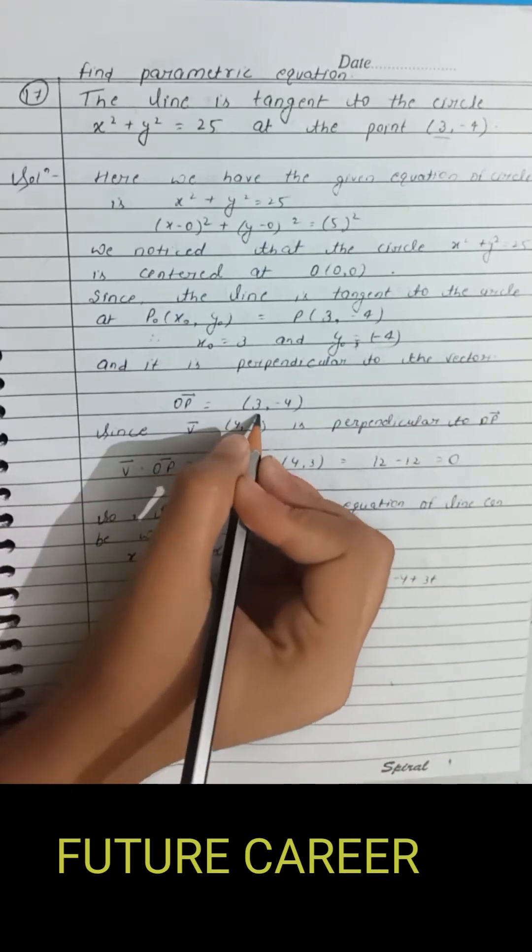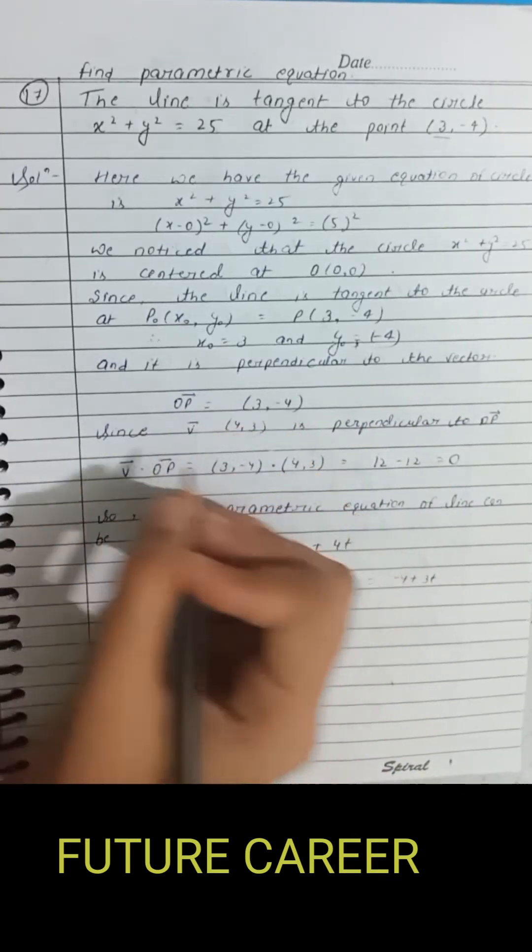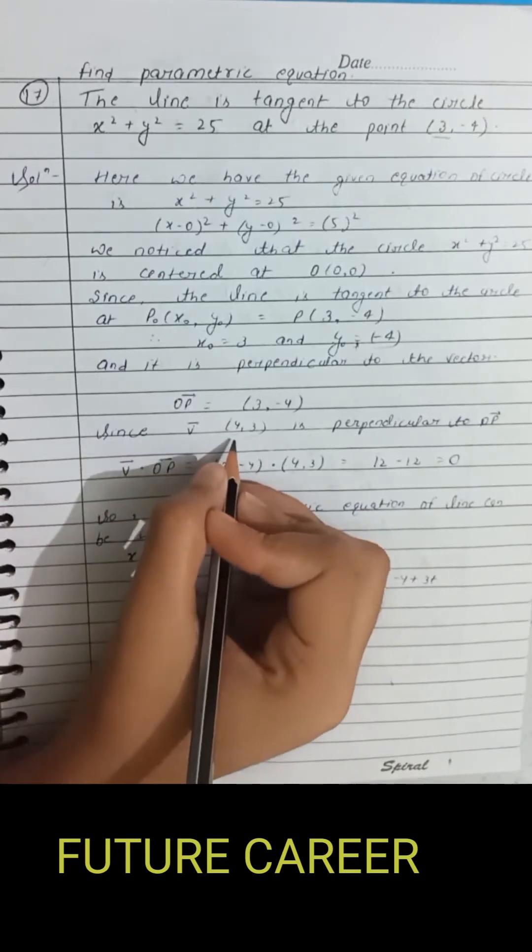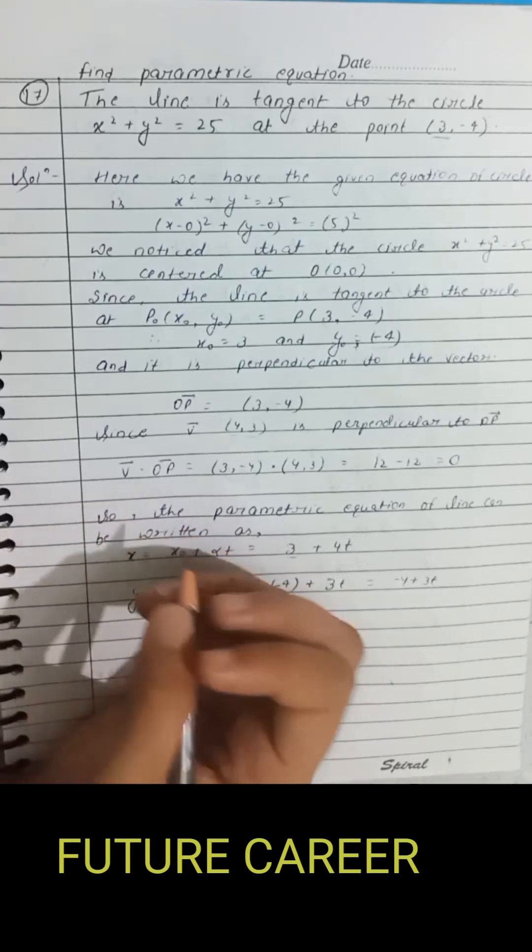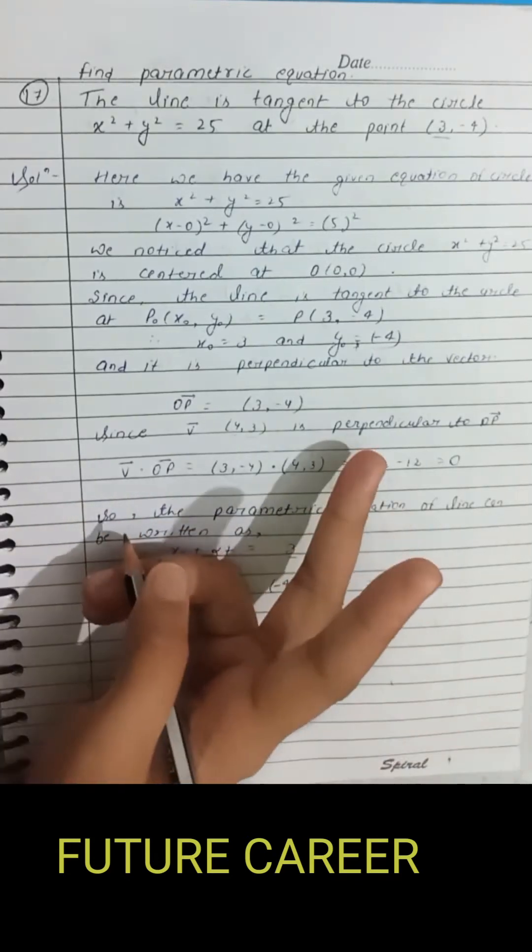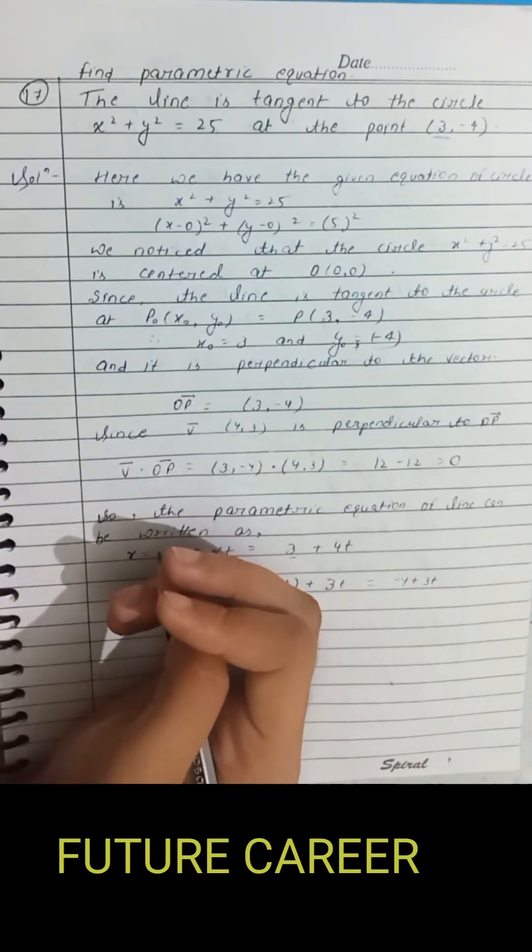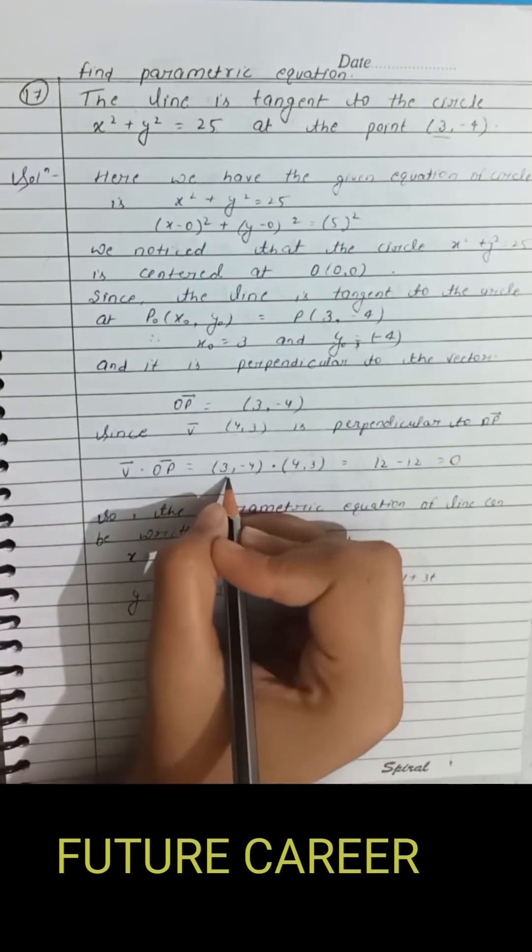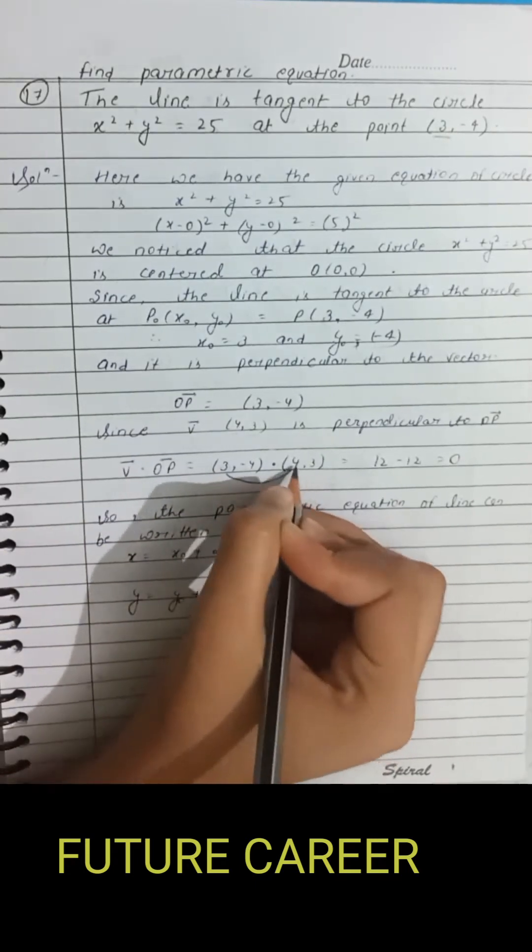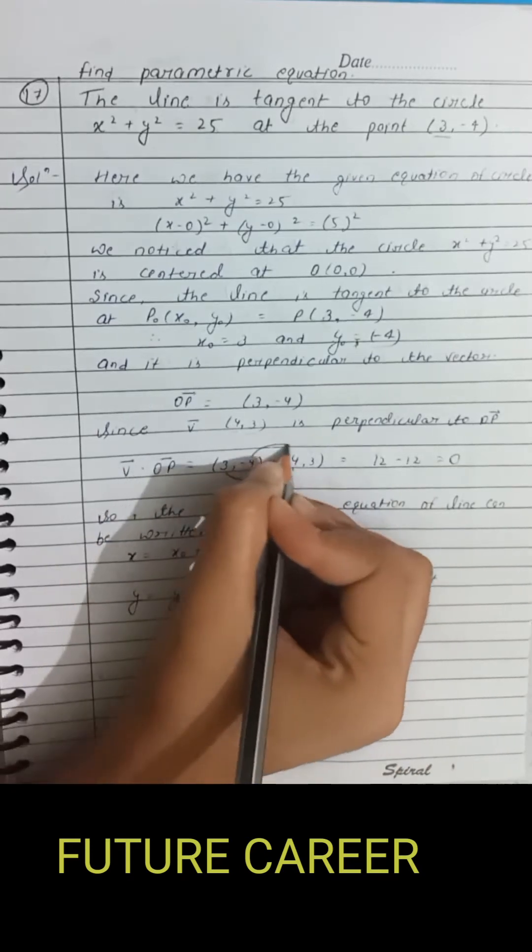Since v equals (4, 3) is perpendicular to OP, and as we know that if two vectors are perpendicular then their dot product is 0, so v dot OP equals 0. So 3 times 4 equals 12 and -4 times 3 equals -12.